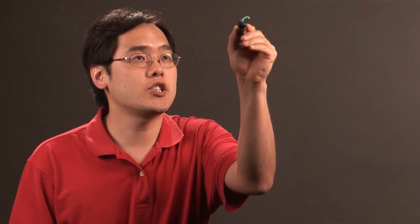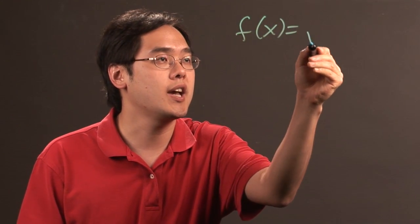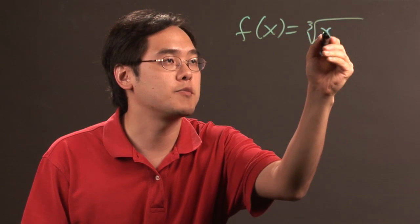Let's give an example of a radical function and practice finding the inverse using those same consistent steps. For example, let's say you want to find the inverse of the function: the cube root of x minus 1.